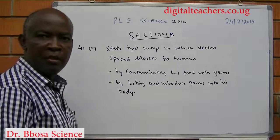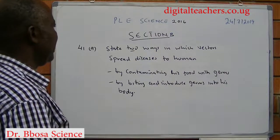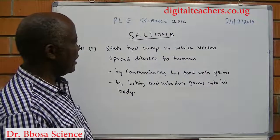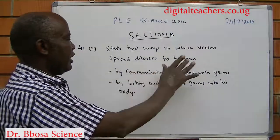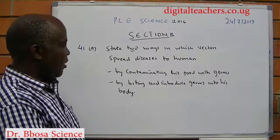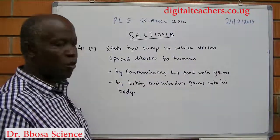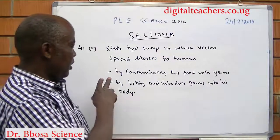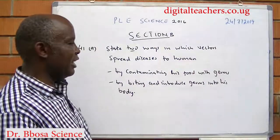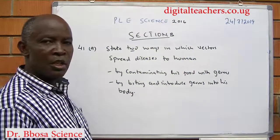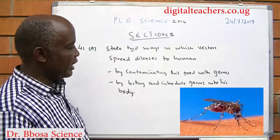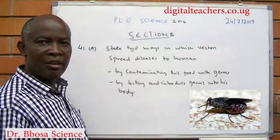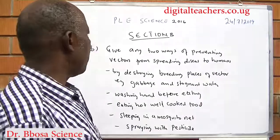Section B, number 41A states two ways in which vectors spread diseases to humans. One: by contaminating his food, for example house flies. Two: by biting and introducing germs to his body, for example mosquitoes and tsetse flies.